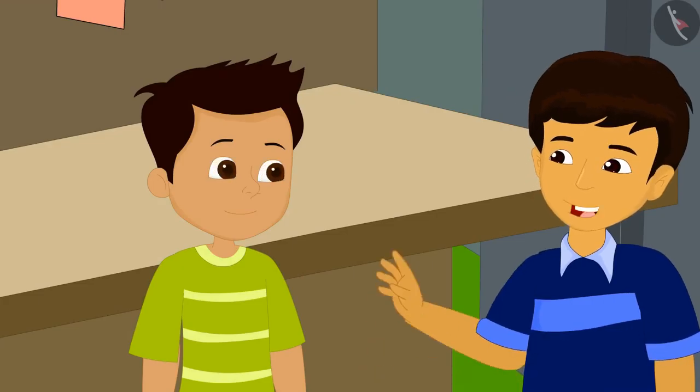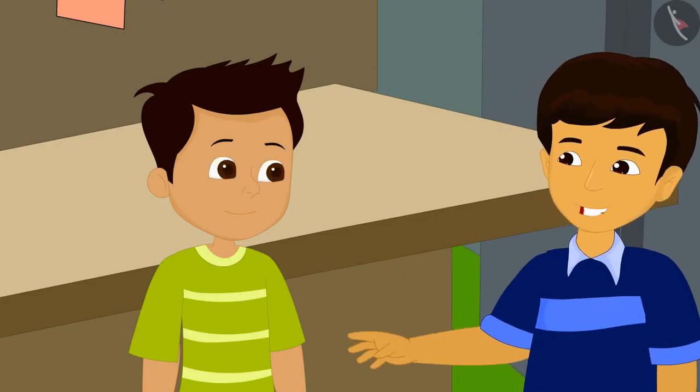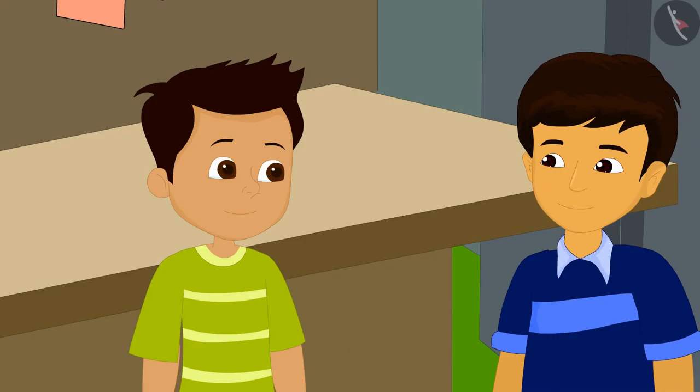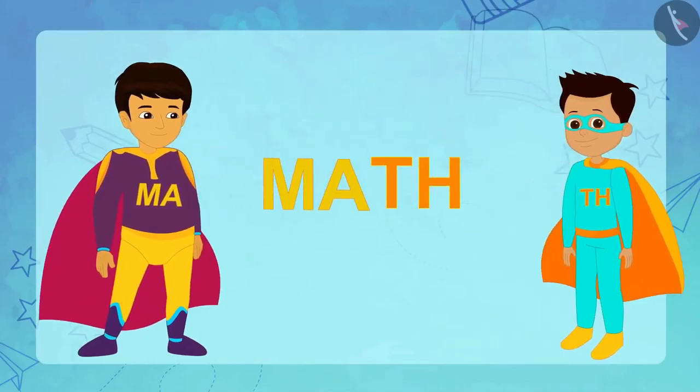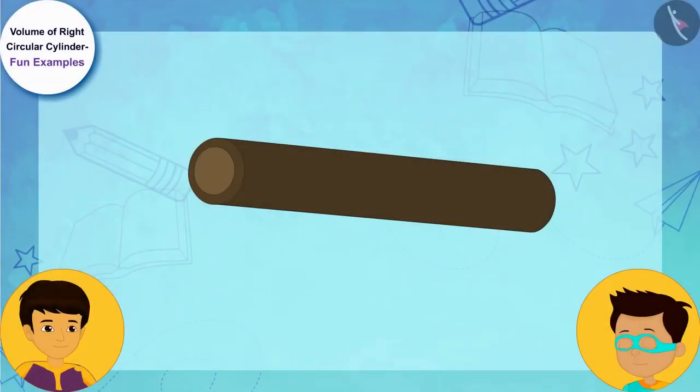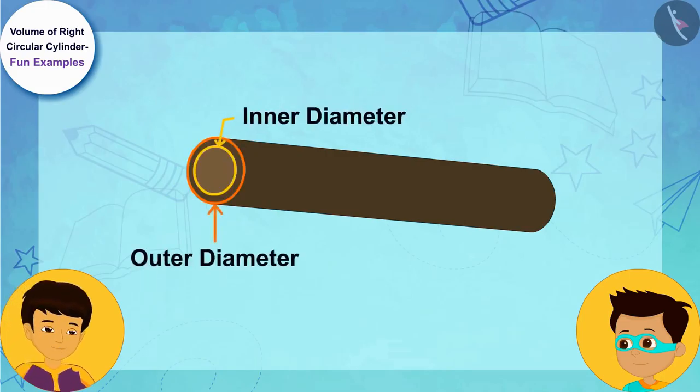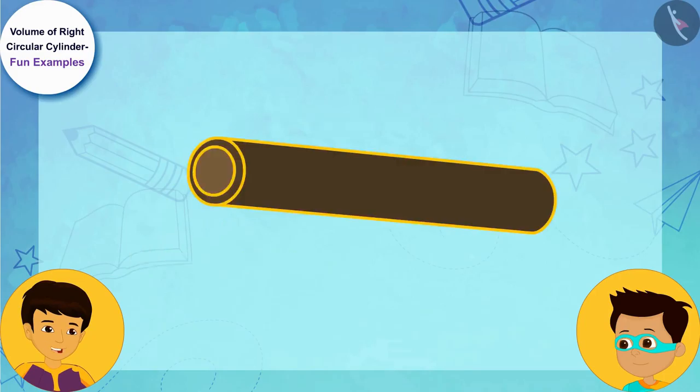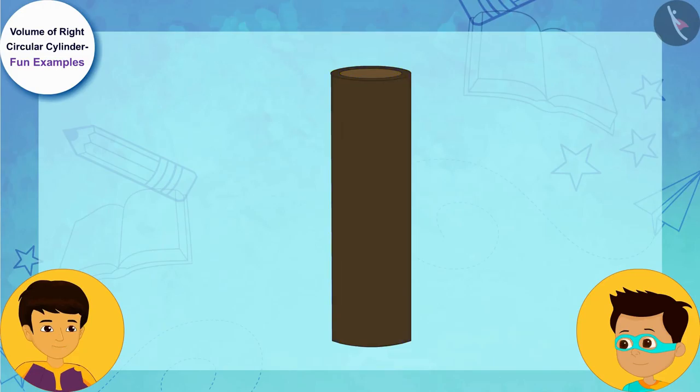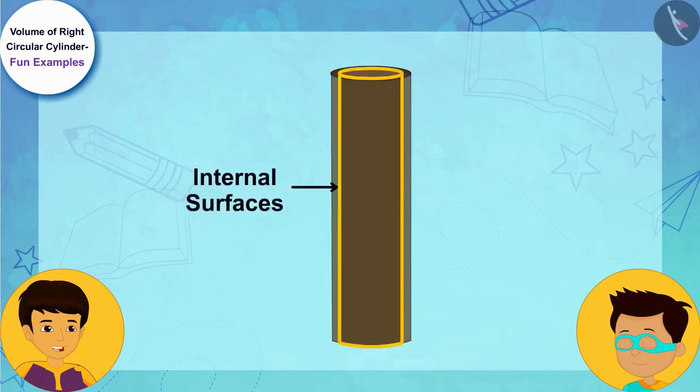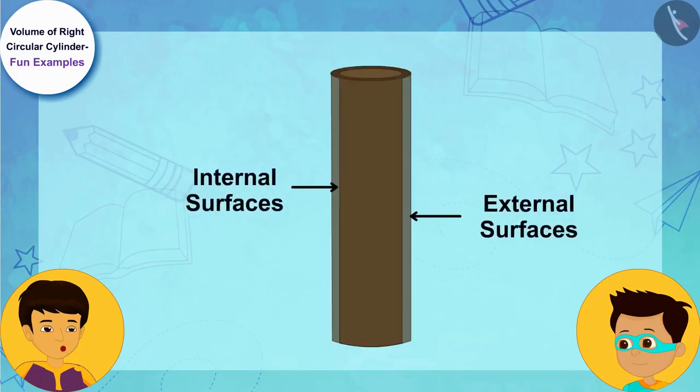Thomas, we can find the solution to Uncle's problem through mathematics. That means, it's math time. Look, Thomas, because the pipe has some thickness, so it has 2 diameters. Yes, the iron required to make the pipe is occupying the space between its internal and external surfaces.